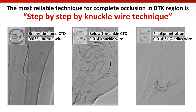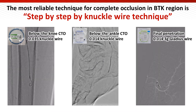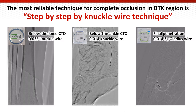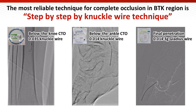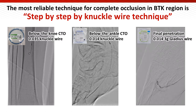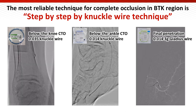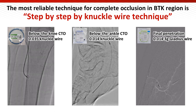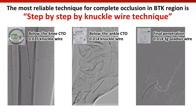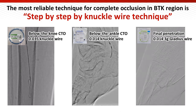Another technique for complete occlusion in the BTK area is a step-by-step approach using the NAKU wire technique. In our experience, 0.035 NAKU is mostly fit for proximal BTK CTO, while the 0.014 NAKU wire technique is reasonable for distal BTK and BTA CTO. After almost reaching the pedal artery or digital artery, a 0.014 3-gram Gladius wire would be appropriate to enter the true lumen.